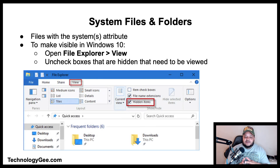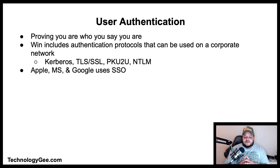System files and folders are files with the system attribute. To make these files and folders visible in Windows 10, just open File Explorer, select View, then uncheck the boxes for items that are hidden that need to be viewed.